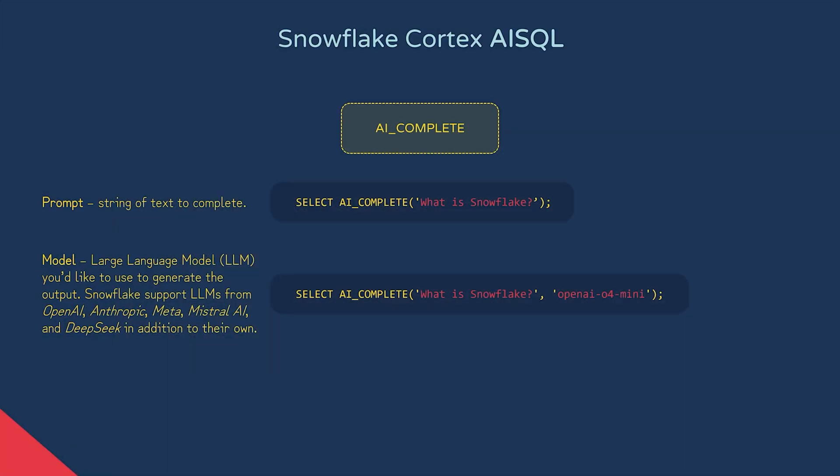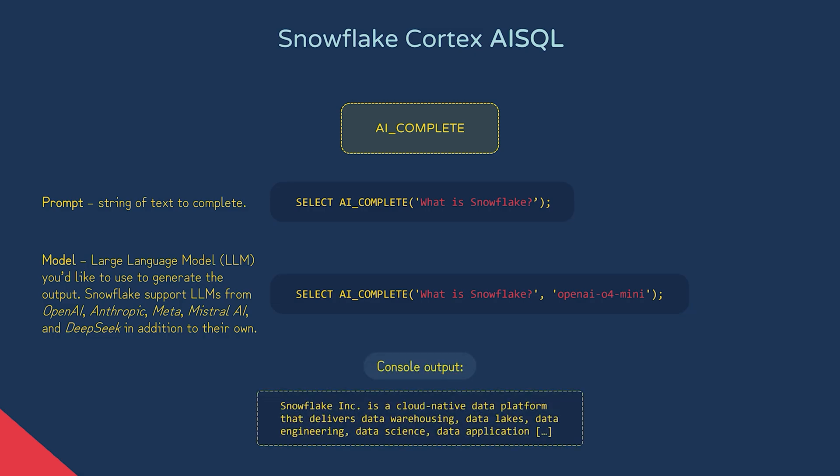Let's say I've set the model to OpenAI O4 Mini and I'm calling the function on its own with the question: what is Snowflake? The output will be a string, creating what is technically called a completion — and what we'd informally call a response to the question.